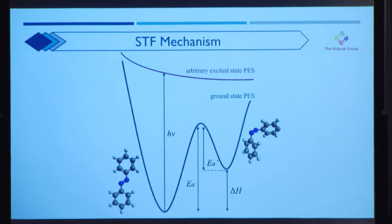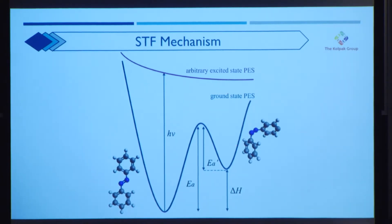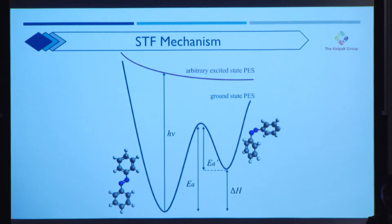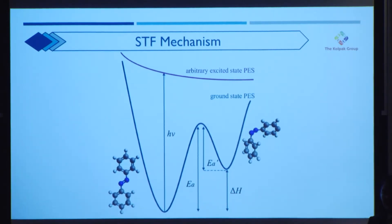Looking more specifically into the mechanism of STFs, we see that when a low energy structure absorbs a photon with energy hν, it can be excited into the transition state over the activation energy barrier and settle into the higher energy on structure. The single most important value on this diagram is the delta H value, defined as the energy difference between the high and the low energy structures — equivalent to the amount of energy a single molecule can store per energy cycle. The other important value is the activation energy for the back reaction, E_A prime, which determines how much energy you need to trigger the energy release step.